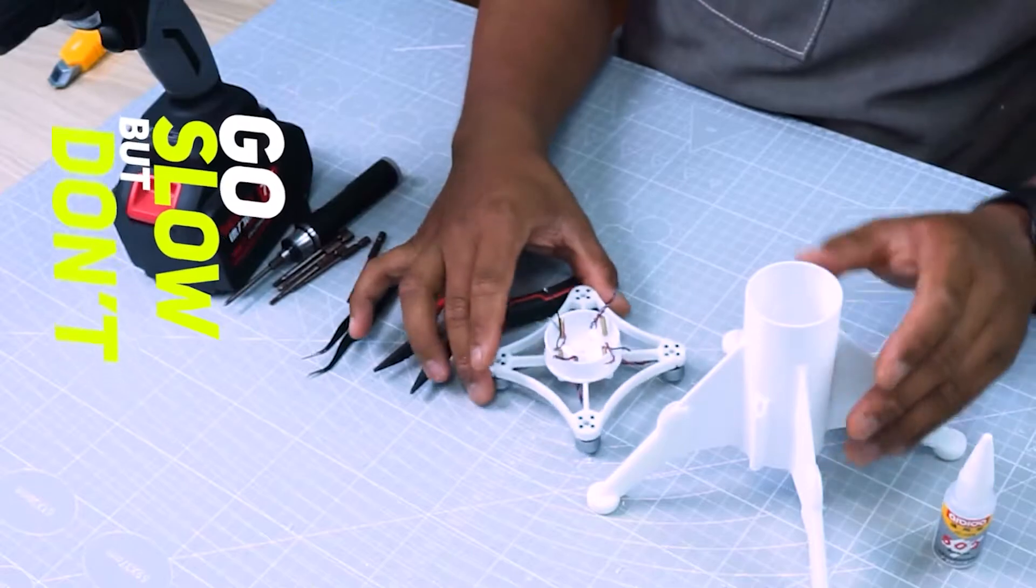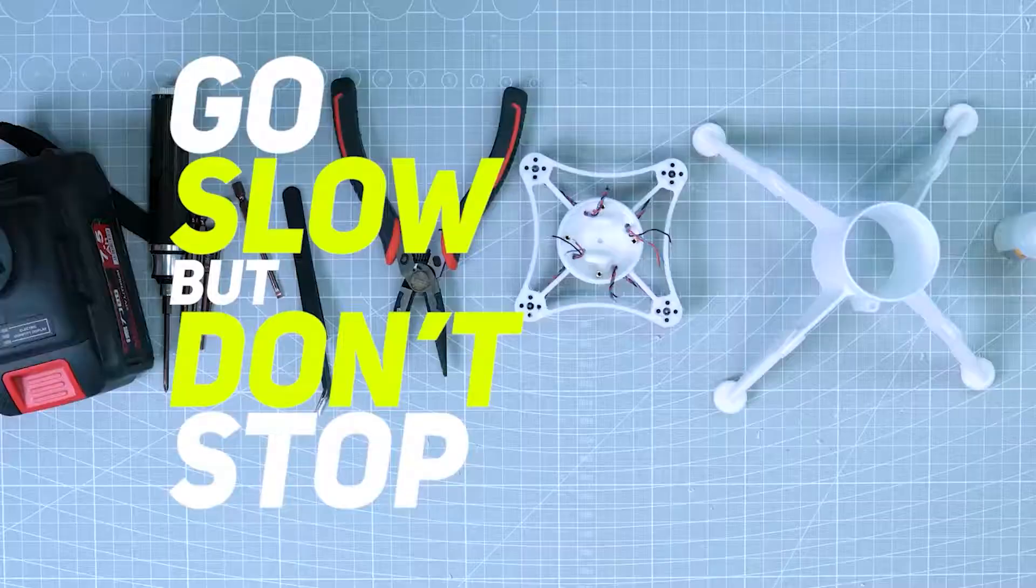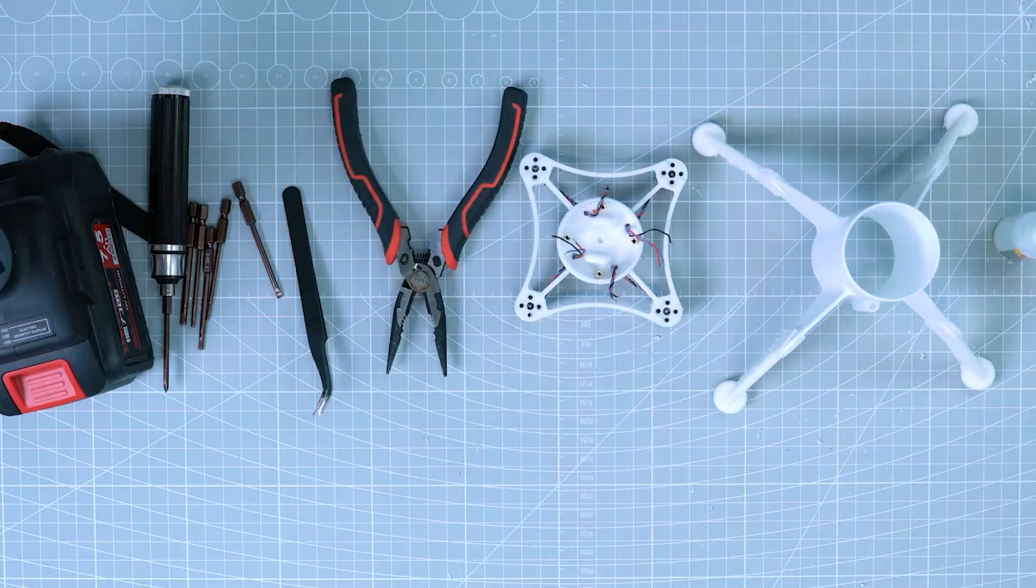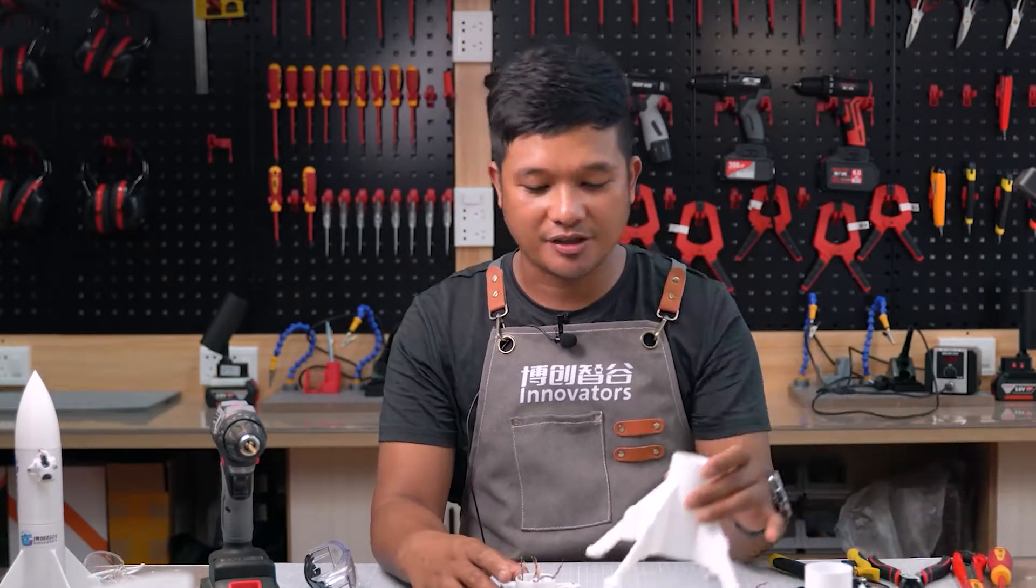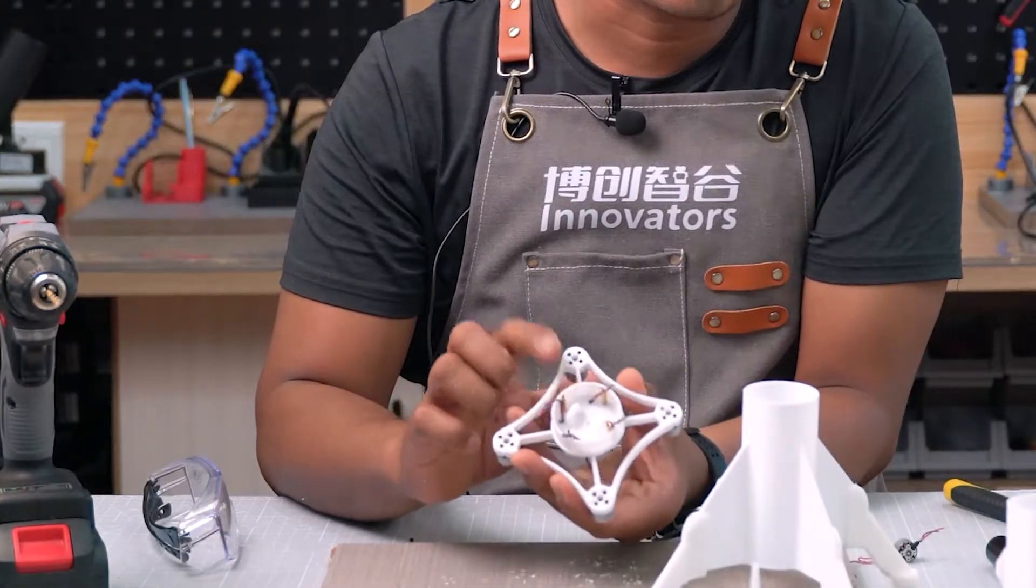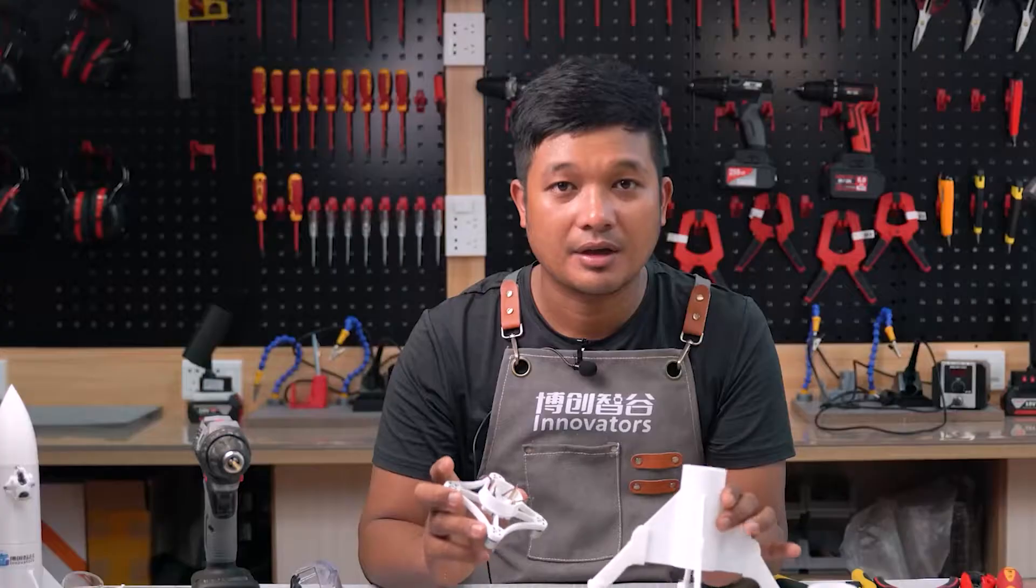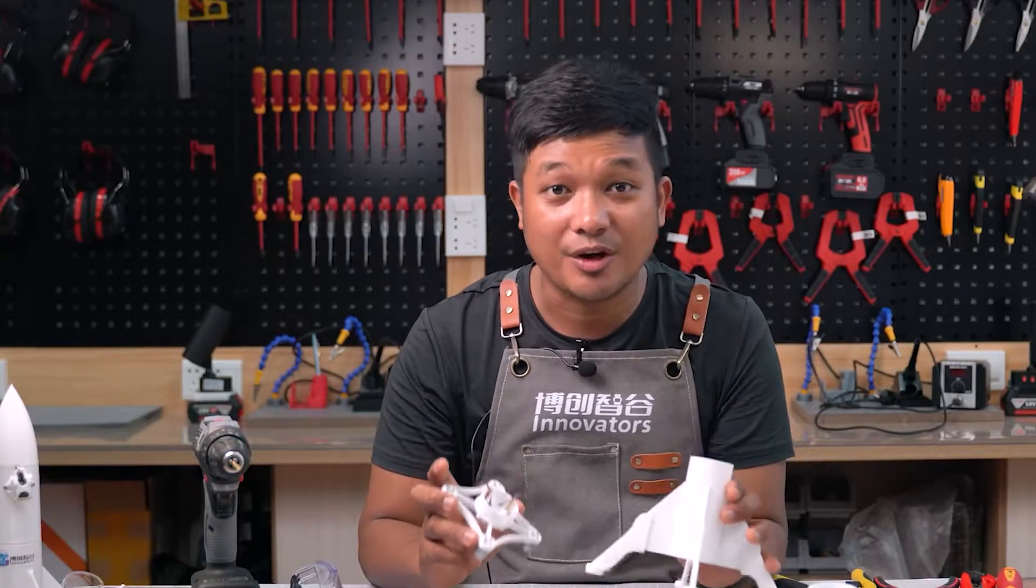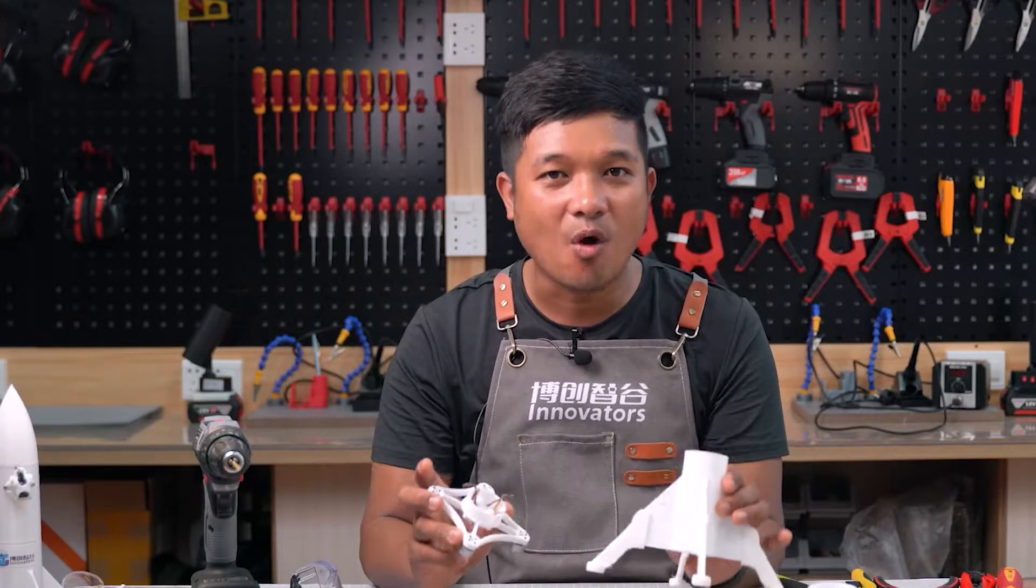We finish the first part of our making. Now we finish our first part of making in this project which is the fuselage landing gears and also our motor mounting together with the cap cover of our rocket. See you on the next part which we are going to solder some wires already on our flight controller.